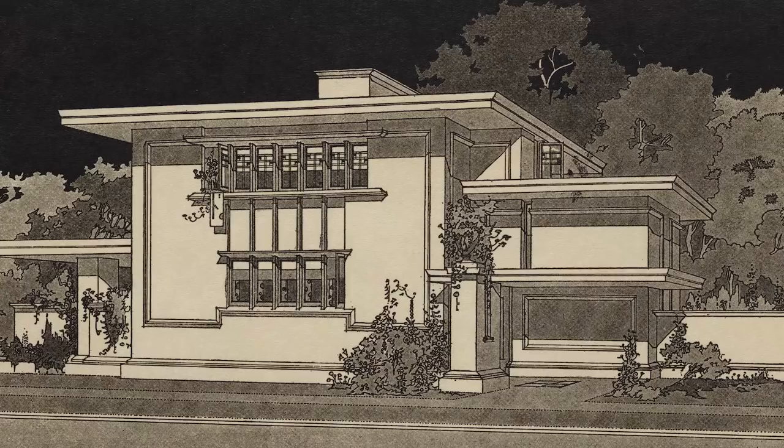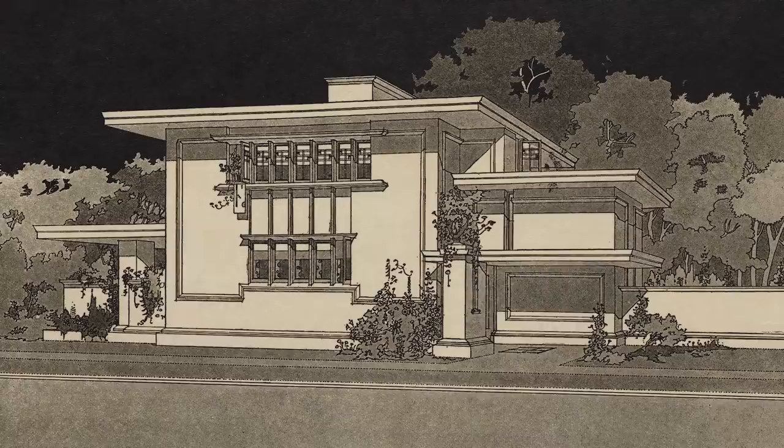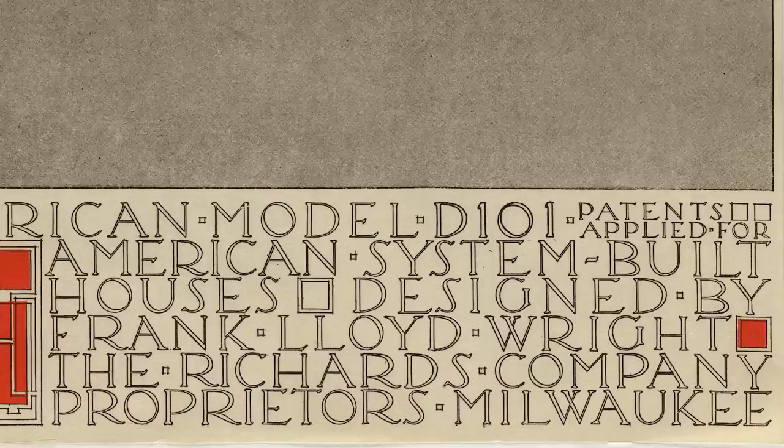Furthermore, they're being told that they can own not just an American home, but a distinctly American architecture by a distinct American architect — probably the most famous architect of that time, 1917: Frank Lloyd Wright. On the shop drawings and on the folio published by the Richards Company, every drawing said, usually in the lower right, 'patent applied for,' which was a clue that Wright was interested in interfacing with industry and creating intellectual property from his designs.